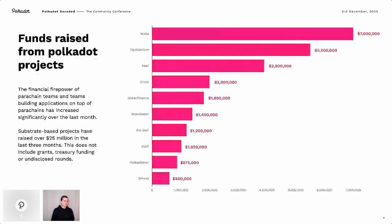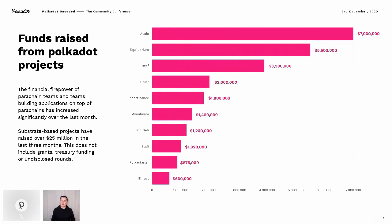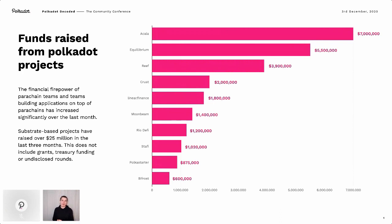This slide tries to find measurements for the maturity of the Polkadot parachain ecosystem — specifically funds raised from parachain projects and teams building on top of parachains. The financial firepower of parachain teams has really increased over the last months, with investors mirroring that by being willing to put significantly more money behind these teams. Substrate-based projects have raised over $25 million just in the last few months — and that's not even the full picture, as it doesn't include Web3 Foundation grants, Polkadot on-chain treasury funding, or undisclosed rounds. This is really just external funding from deals in the public domain.